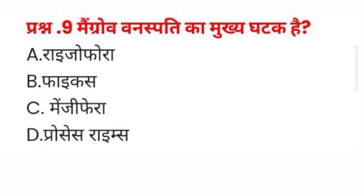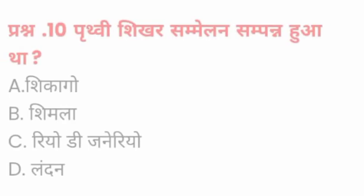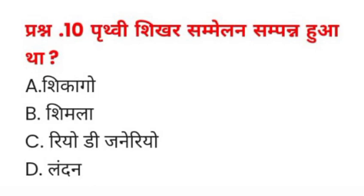Question number nine: Mangrove वनस्पती का मुख्य घटक है — A) Rhizophora, B) Ficus, C) Mangifera, D) Prosopis। इसका सही जवाब A) Rhizophora होगा। Question number ten: पृथ्वी शिखर सम्मेलन संपन्न हुआ था — A) Chicago, B) Shimla, C) Rio de Janeiro, D) London।